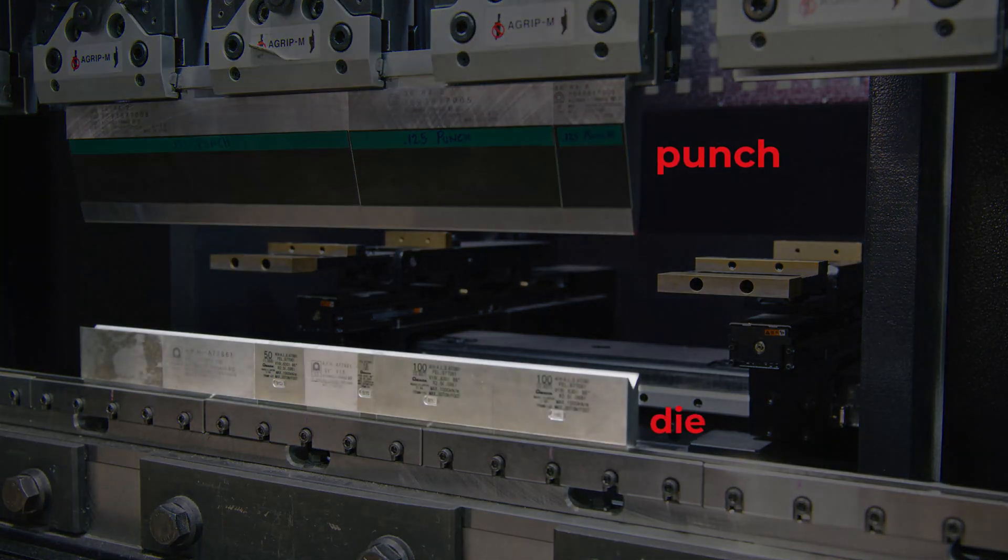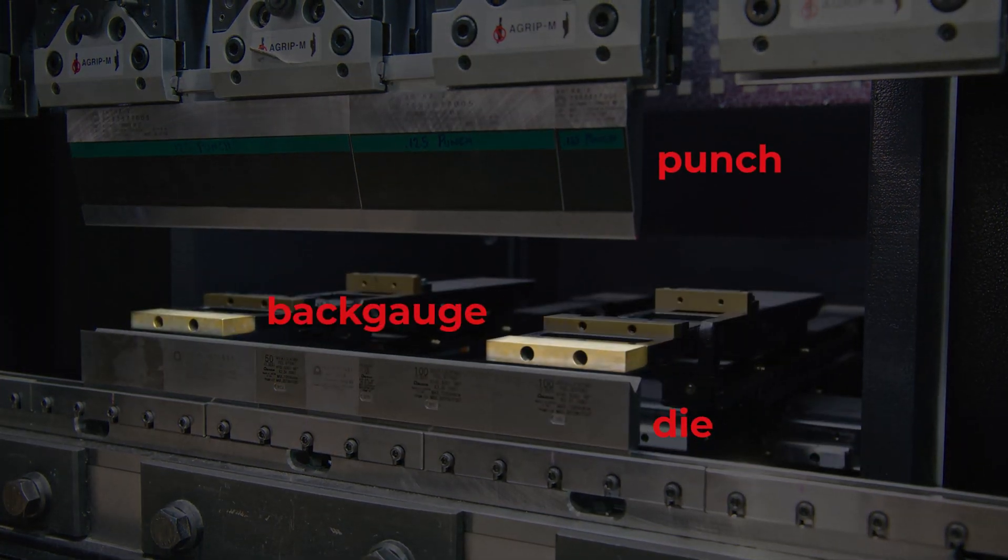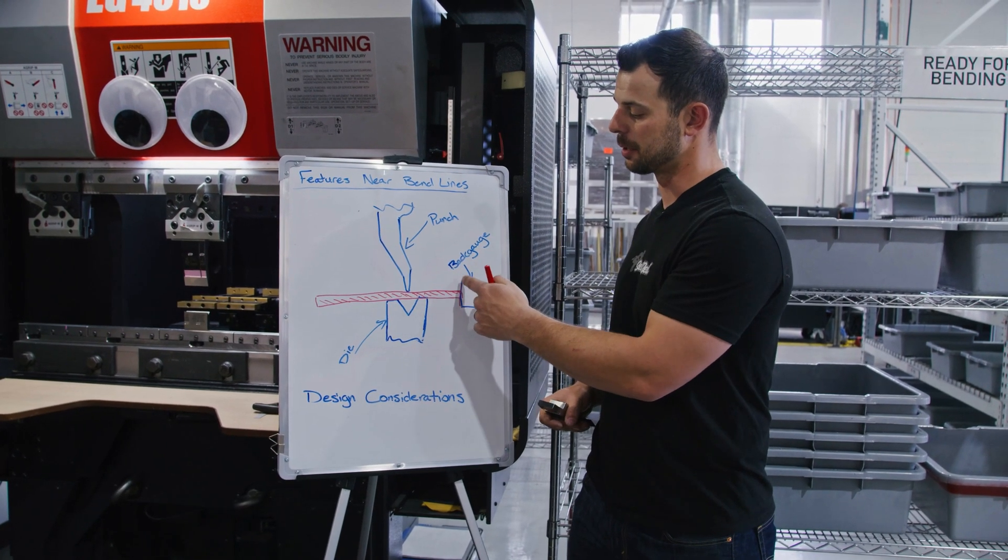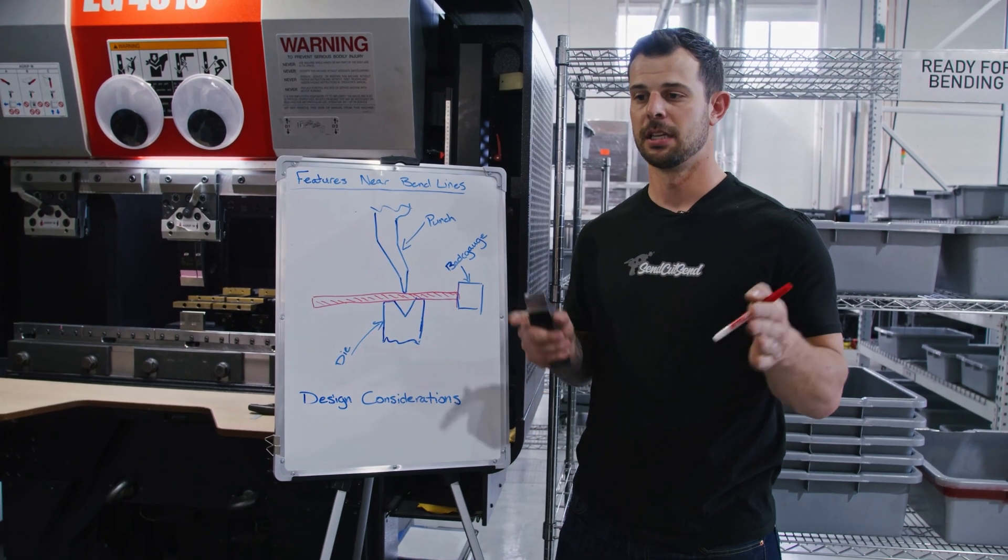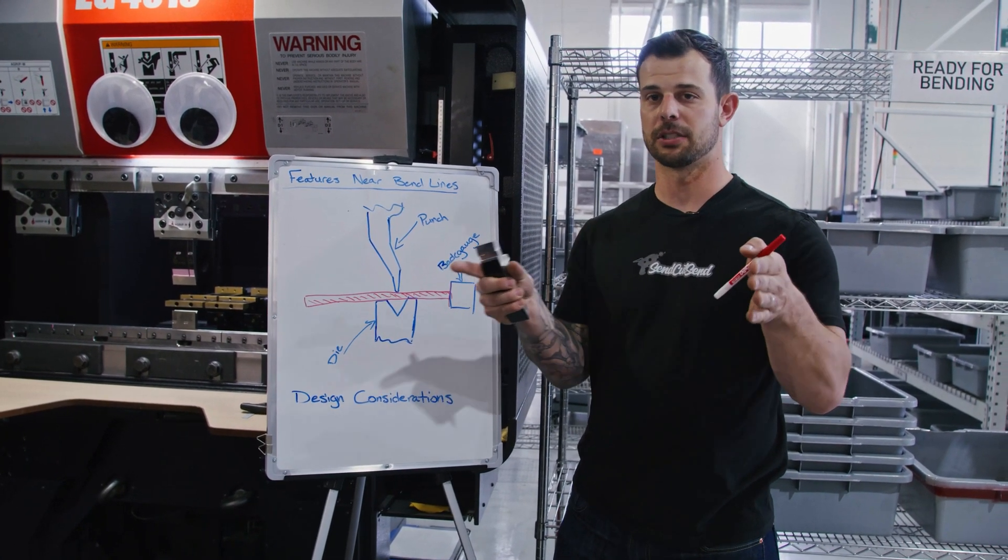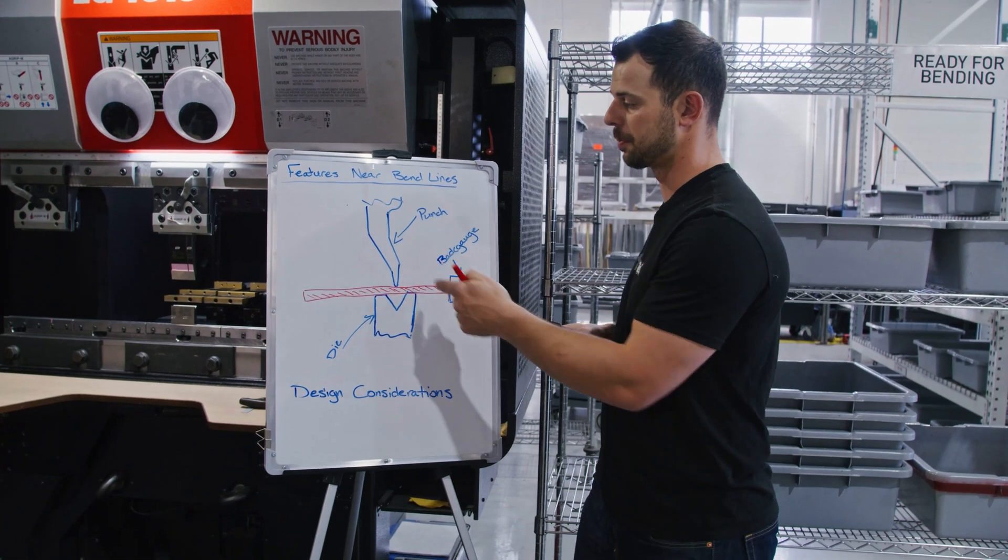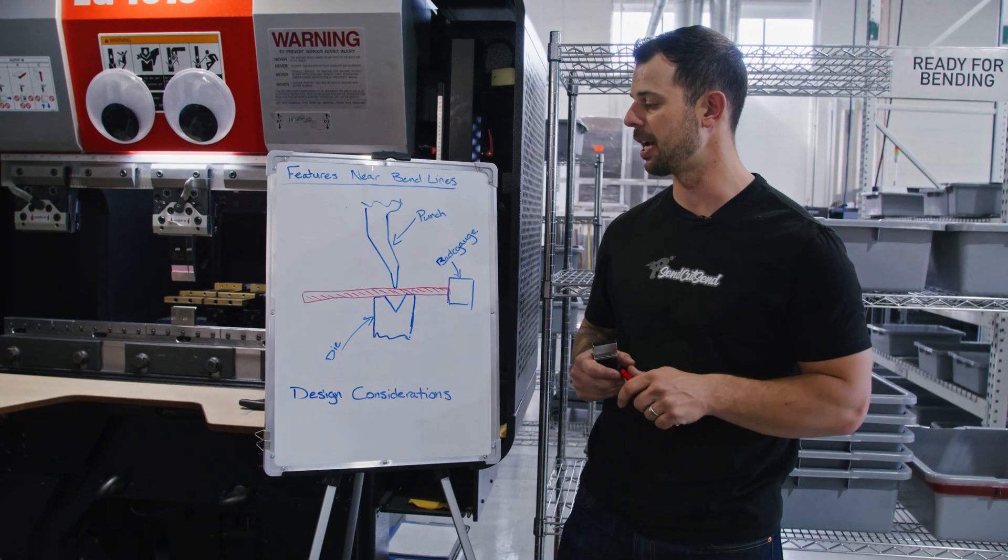We have the punch, the die, and the back gauge. The back gauge essentially just gets us a spot that we put the material up against that not only orientates the part in an angle, but also in the depth representation with respect to the punch and your center line of your bend.